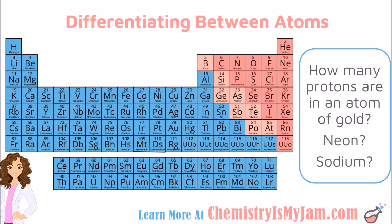A quick glance at the periodic table will allow me to answer the question: how many protons are in an atom of gold? Gold is right here — it has a symbol of Au, and it has an atomic number of 79, so gold has 79 protons. Neon is right here — it has 10 protons, because its atomic number is 10. Sodium is over here — sodium has 11 protons, because its atomic number is 11.